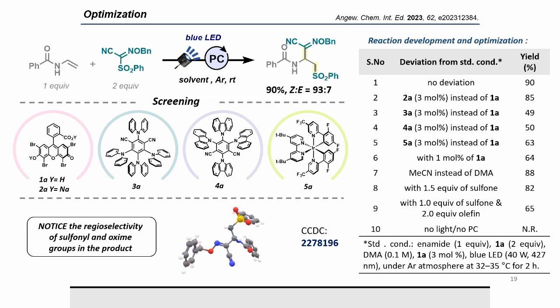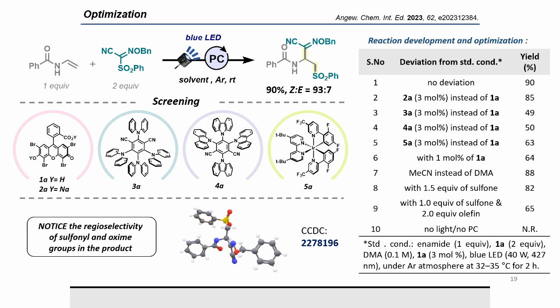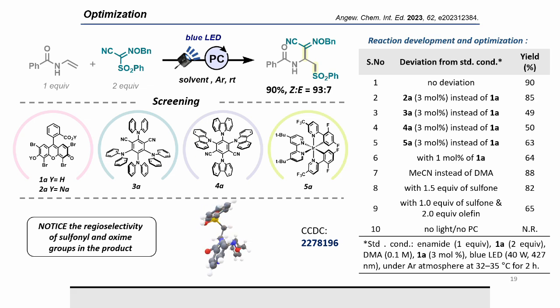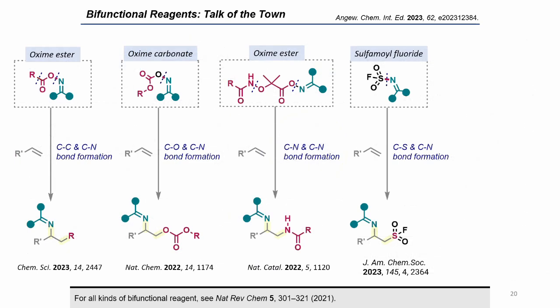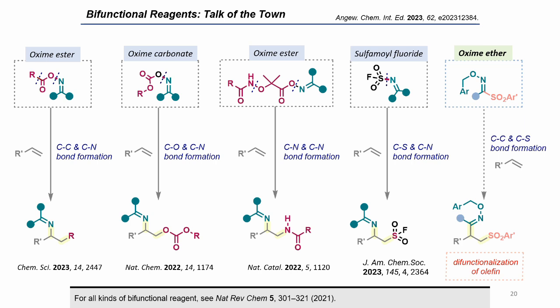This was further confirmed by crystal structure analysis. Here we successfully developed sulfonyl oxymethar as a bifunctional reagent via concomitant formation of C–S and C–C bonds, keeping the N–O bond intact at the oxymsulfonylated product. When we searched the previous literature on oxime-based bifunctional reagents, we found several exciting reports of alkene difunctionalization using oxime esters, oxime carbonates, and sulfonyl fluorides as bifunctional reagents via direct N–O bond fragmentation — but there was no report of an oxime ether-based bifunctional reagent.